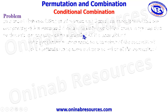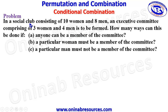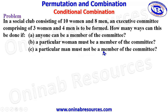So we have our problem here. In a social club consisting of 10 women and 8 men, an executive committee comprising of 3 women and 4 men is to be formed. How many ways can this be done if: A, anyone can be a member of the committee; B, a particular woman must be a member of the committee; and C, a particular man must not be a member of the committee.